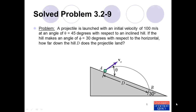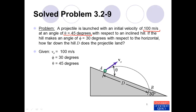We read the problem and write down what's given: the initial velocity of the projectile, the launch angle with respect to the incline, and the angle that the incline makes — this is phi. We are then asked to determine how far down the hill the projectile lands; we want to find this distance D.